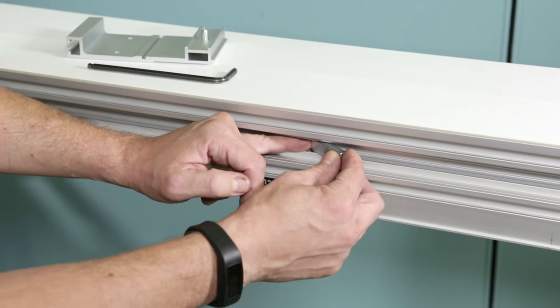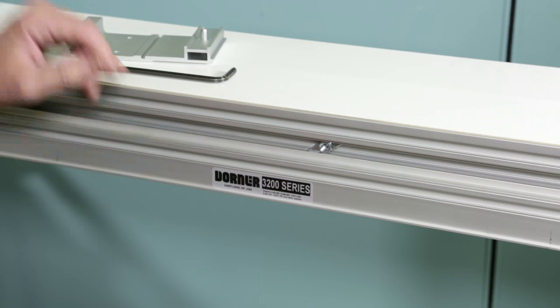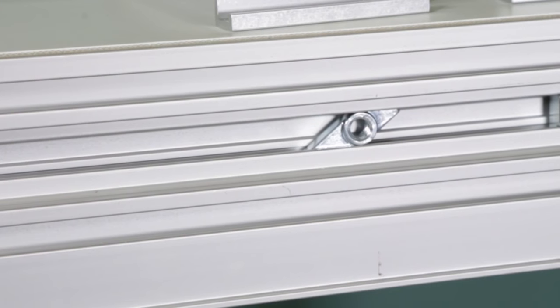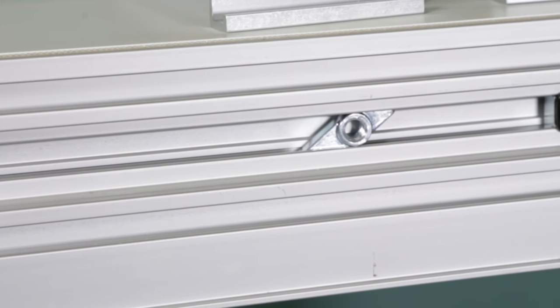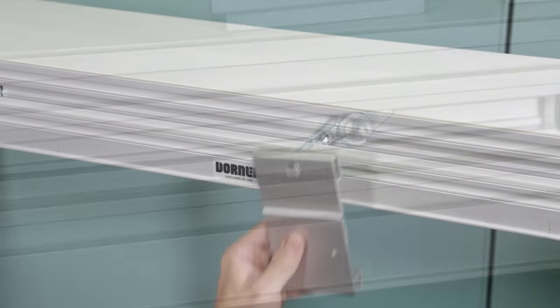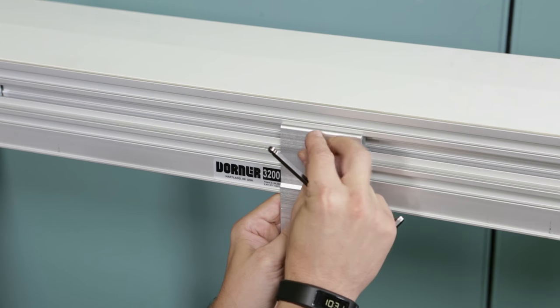To attach the mounting brackets, first insert the twist nut into the conveyor center slot. Make sure the twist nut rotates into the locked position. Fasten the brackets to the conveyor with mounting screws.